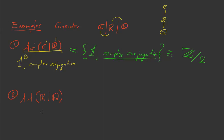Now, Aut(ℝ|ℚ): the automorphisms of ℝ fixing ℚ. The identity is in here, and this time that's the only element. So Aut(ℝ|ℚ) is just the trivial group. There are no non-trivial automorphisms of ℝ that fix ℚ — though this is also not easy to see, so maybe I'll put up a video about why it's true.